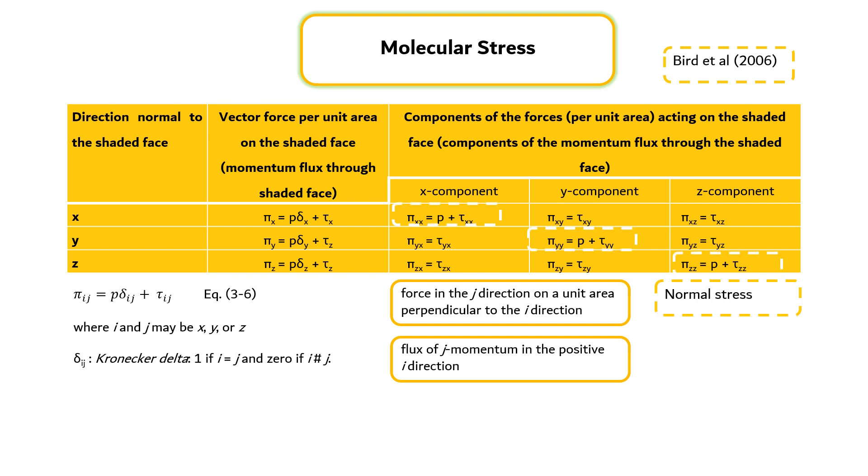The stresses pi_xx, pi_yy, and pi_zz are called normal stresses, whereas the remaining quantities are called shear stresses. These quantities, which have two subscripts associated with the coordinate directions, are referred to as tensors. Therefore, we will refer to tau as the viscous stress tensor, and pi as the molecular stress tensor.